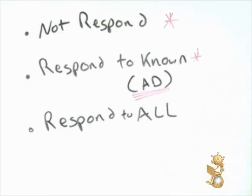If you configure a WDS server to respond to known computers, all computers that are in Active Directory or members of the domain will be able to receive a response from WDS and start copying an image. One benefit of this is to prevent unknown or untrusted computers from accessing your network — the last thing you want is for someone to come into your network, turn on their computer, and try to image their machine or another machine from your WDS server.